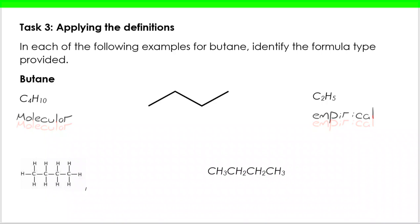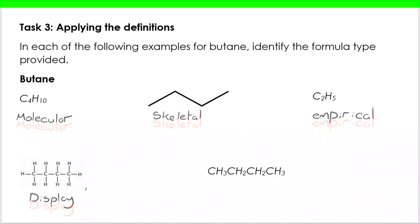The skeletal formula simplifies things and shows simply the carbon-carbon bonds as sticks, ignoring hydrogens and adding anything that doesn't fit those criteria. I have four carbons shown. Because nothing else is shown, and carbon forms four bonds, this carbon has three H's coming from it, these two middle carbons each have two, and the last has three. The display formula shows every single bond — that's clearly the one on the bottom left-hand side — and I can see this carbon has three hydrogens, these two have two each, and this one has three.